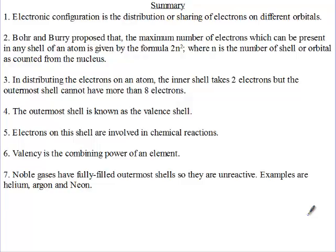Let's summarize our lesson on electronic configuration. Electronic configuration is the distribution of electrons on different orbitals. The scheme we used was proposed by Bohr and Barry, who proposed that the maximum number of electrons which can be present in any shell of an atom is given by the formula 2 times n squared, where n is the number of the shell as counted from the nucleus.